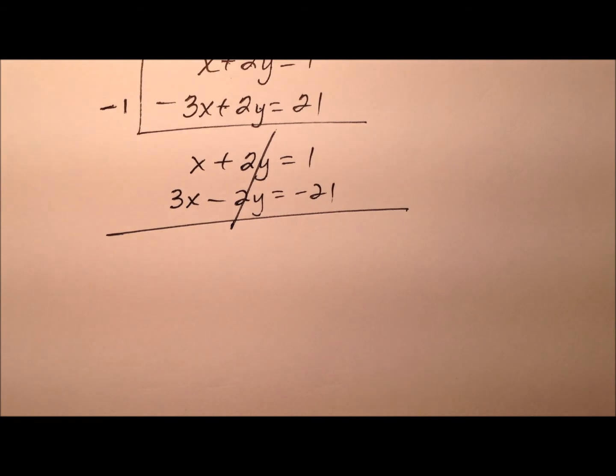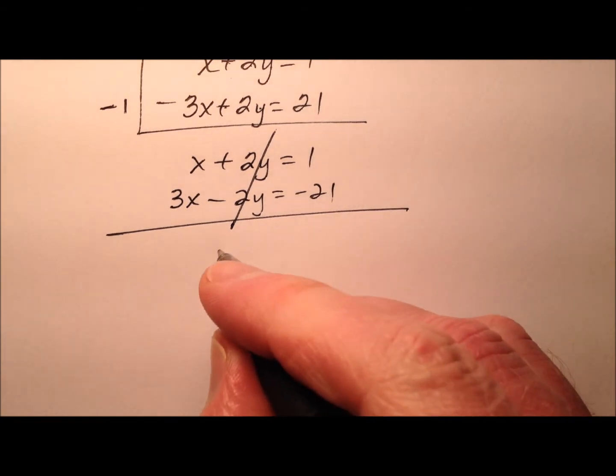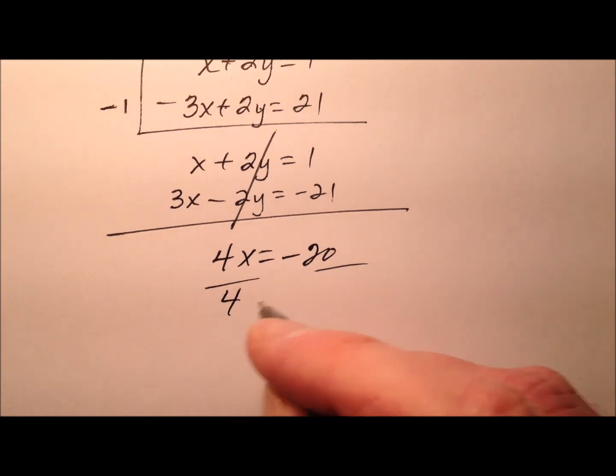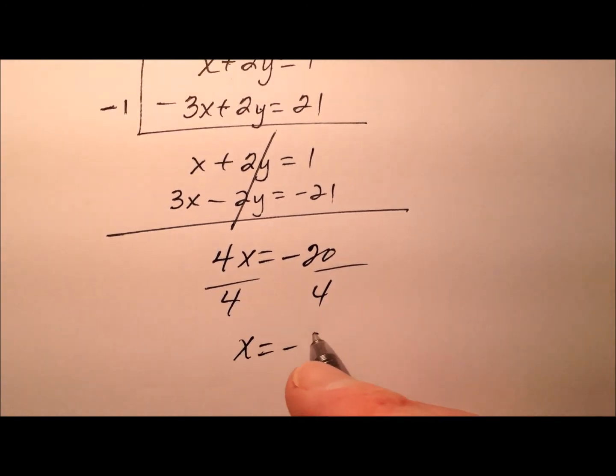So 3x minus 2y equals negative 21. So on addition, the y's will eliminate, and my x has become 4x equals negative 20. So division by 4 gives an x value of negative 5.